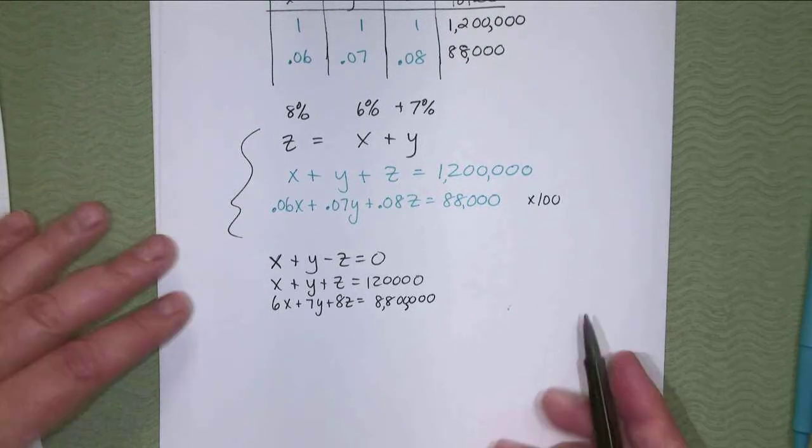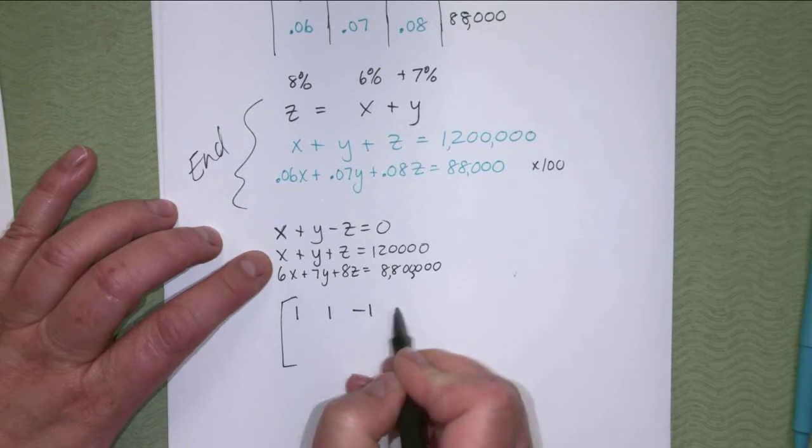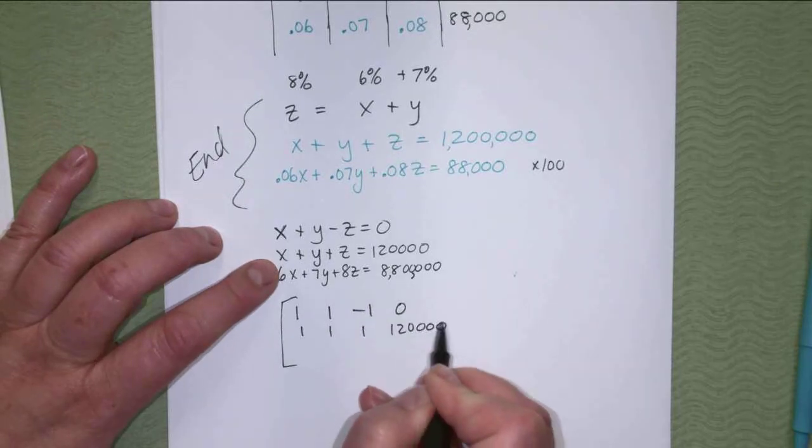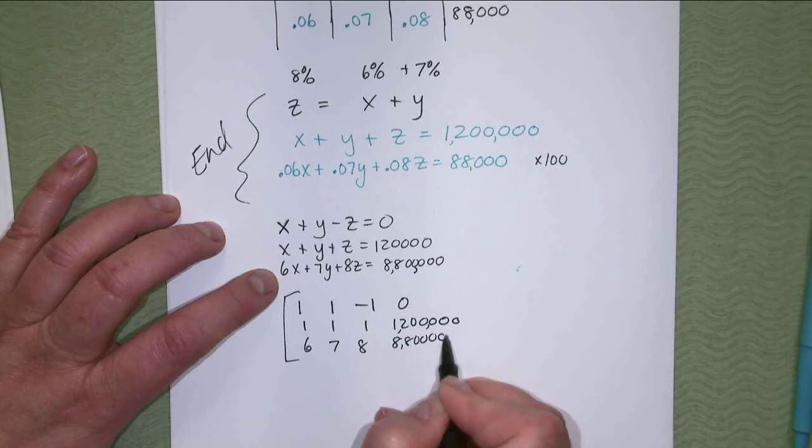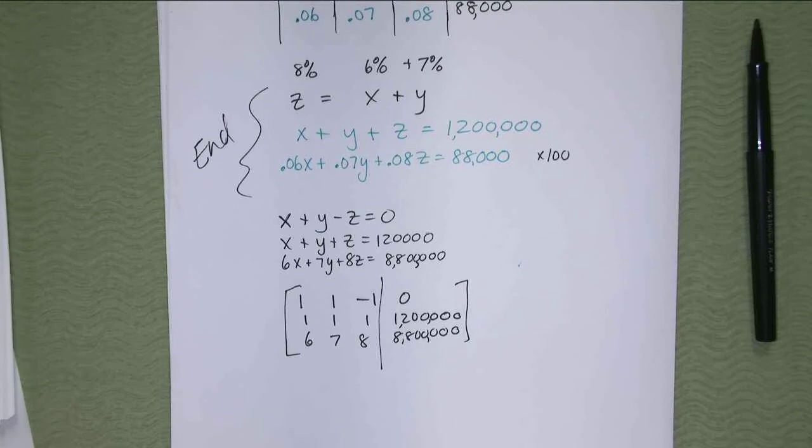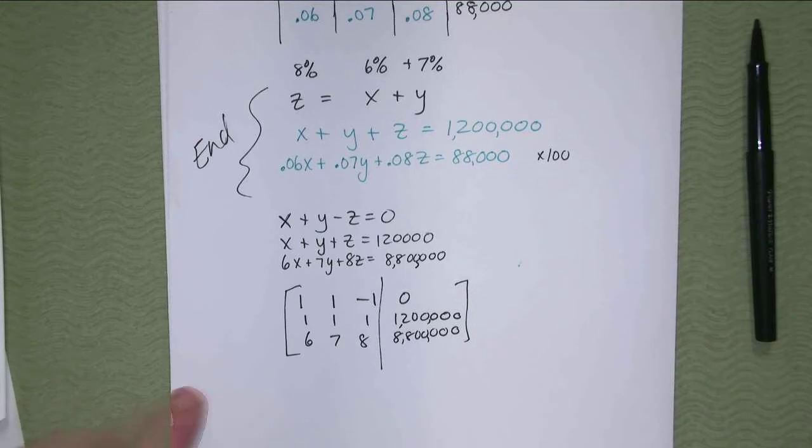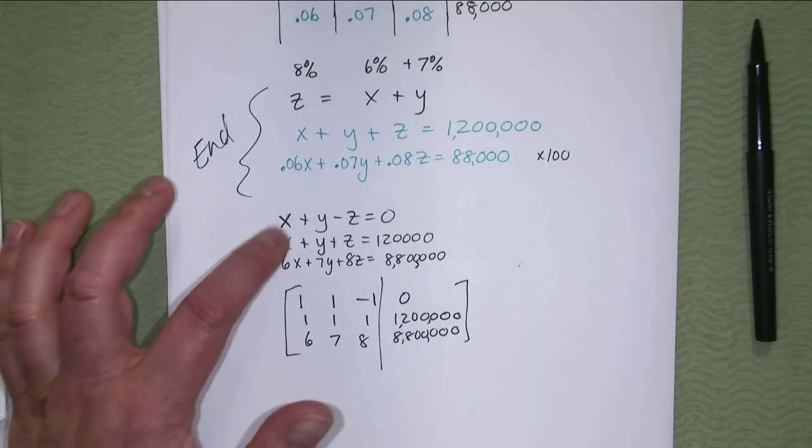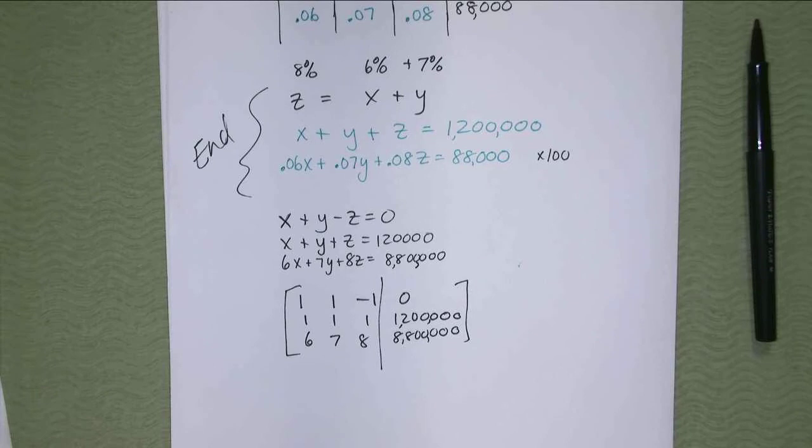If we were going to solve it, how would you put this in a matrix? I would definitely multiply this by 100 so that it would be 6, 7, 8. And I would like that better. So I would do that. How do you put this one in? Rearrange it so it's X, Y, Z equals a number. So if I were putting this in, this first equation is X plus Y minus Z equals 0. The second equation you could put in is X plus Y plus Z equals 1,200,000. And then the third one, I would multiply the whole thing by 100. So then you'd have 6X plus 7Y plus 8Z equals 880,000. And definitely it wouldn't matter which one of these went on top. They both have a 1. But if only one of the three equations had a 1, I'd put that one on top when I'm solving it.